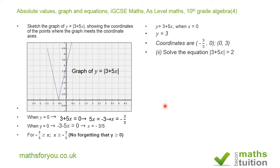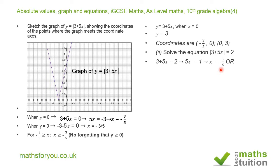For the second question, it says solve the equation absolute value of 3 plus 5x is equal to 2. We can solve this by two methods: by calculation and by graphical method. Firstly, by calculation, looking at 3 plus 5x equal to 2: subtracting 3 from both sides gives 5x equal to minus 1, and dividing both sides by 5 gives x equal to minus 1 over 5, which is minus 0.2.